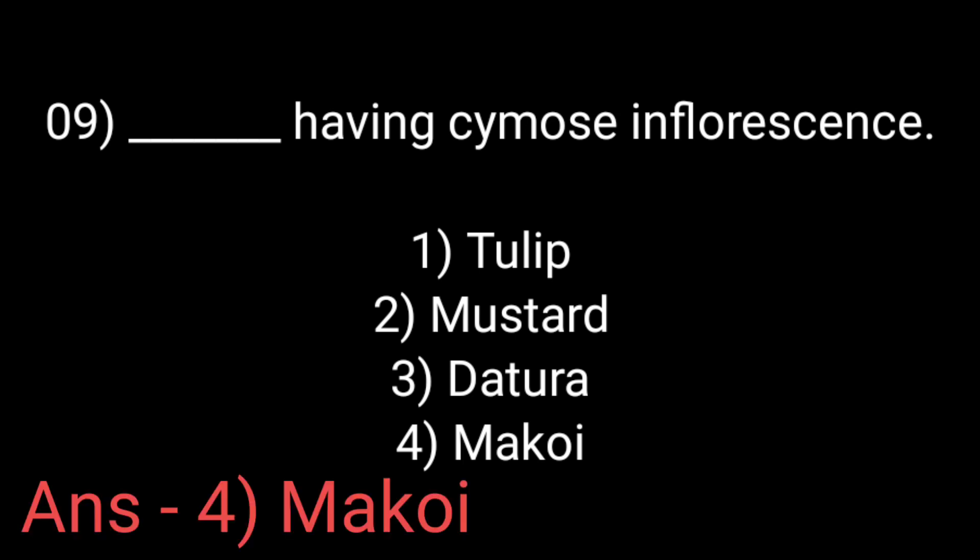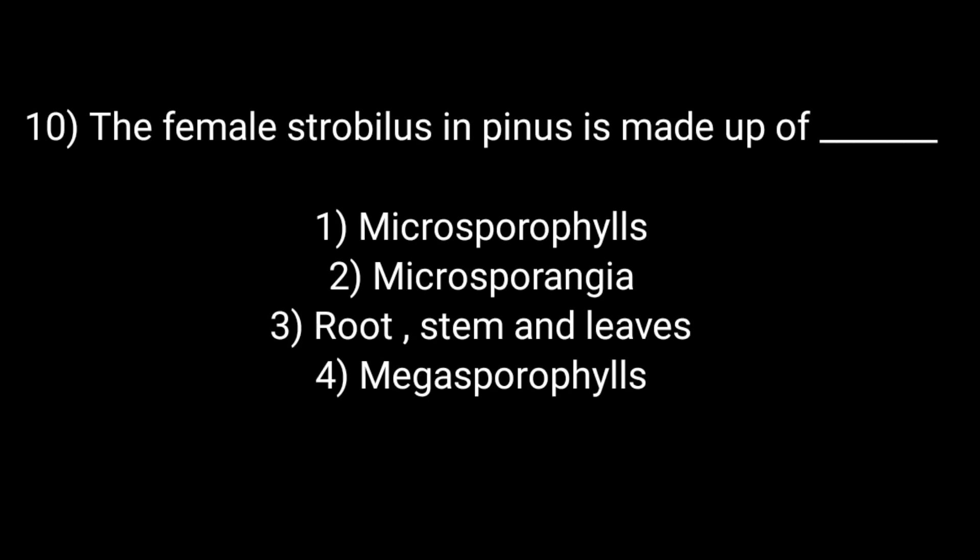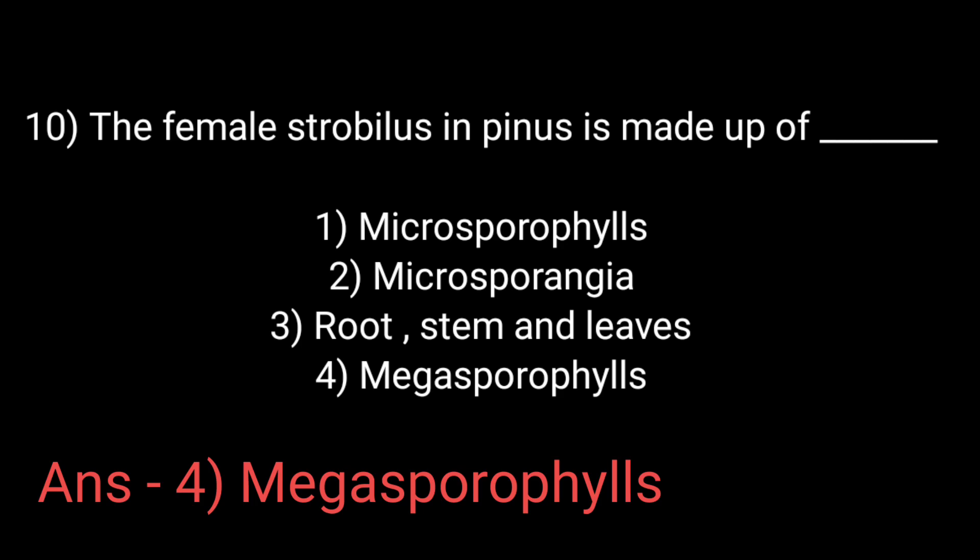Also, Calotropis and Solanum also show cymose inflorescence. The female strobilus in Pinus is made up of: Option 1 Microsporophylls, Option 2 Microsporangia, Option 3 Root, Stem and Leaves, Option 4 Megasporophylls. The answer is Option 4 Megasporophylls.